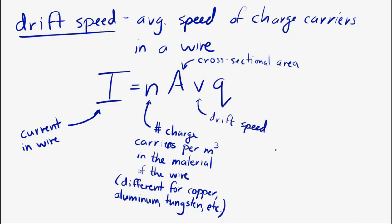v is the drift speed of the charge carriers. So, that's the average speed of the charge carriers. And then, Q represents the charge on each of those charge carriers. So, normally, we're talking about electrons being the charge carriers. So, Q would represent the charge on each electron, which is the fundamental charge, 1.60 times 10 to the minus 19 coulombs.